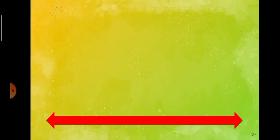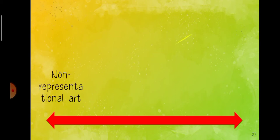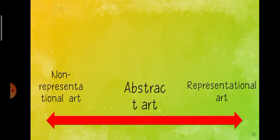Whether or not non-representational and abstract are the same — there is actually no clear-cut answer, because they exist in the same spectrum. They are in a condition that is not limited to a specific set of values but can vary without steps across a continuum.